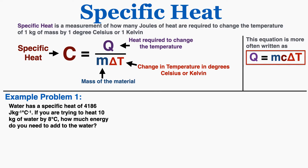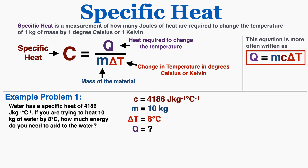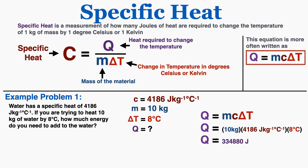This equation is easy to use — let's do some example problems. Water has a specific heat of 4,186 joules per kilogram degree Celsius. If you're trying to heat 10 kilograms of water by 8 degrees Celsius, how much energy do you need? Writing down what we know — the specific heat, the mass, and the change in temperature — and plugging into the equation gives 334,880 joules. That seems like a lot, but it takes a great deal of energy to change the temperature of even simple materials by just a little bit.